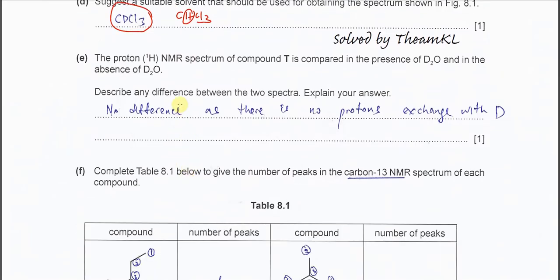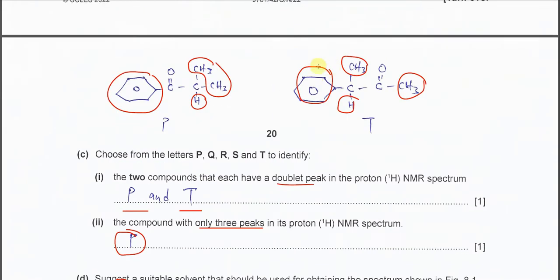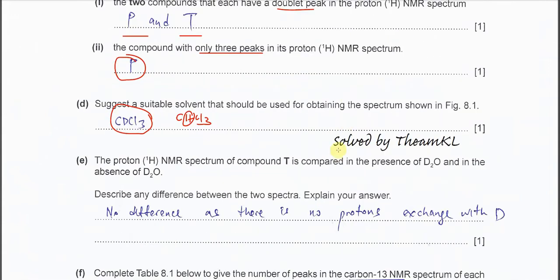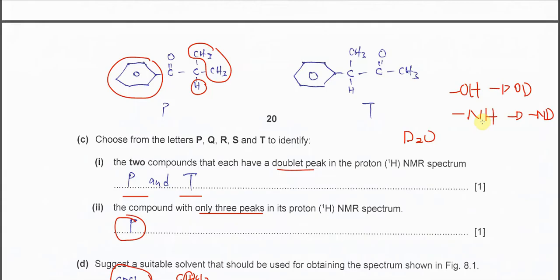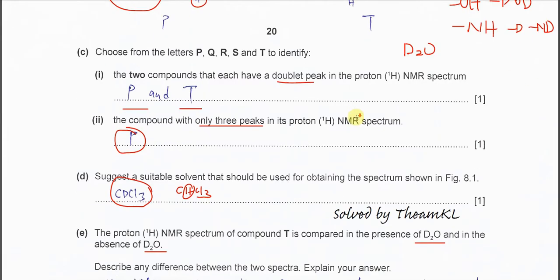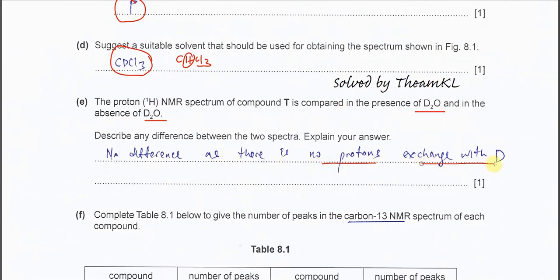Part E: the proton NMR spectrum of compound T is compared with and without D2O. We need to check whether T has an OH or NH group. If there is an OH or NH group, the D from D2O exchanges with H to form OD or ND, so the OH or NH peak disappears. However, compound T has no OH and no NH bond, so there is no proton exchange and no change — no difference with or without D2O.